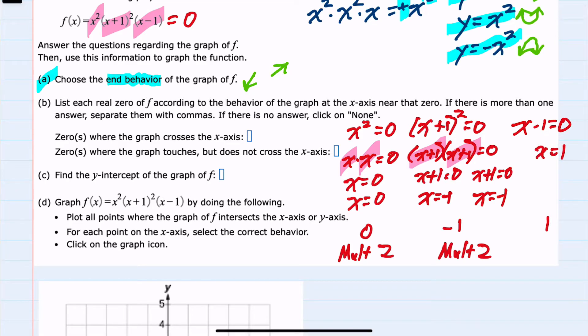So we have a zero at 1, and this time the multiplicity is 1. So we have answered part b: it will cross the x-axis where the multiplicity is odd, which is at 1, and it will touch the x-axis where the multiplicity is even, so we have two of those, negative 1 and 0.